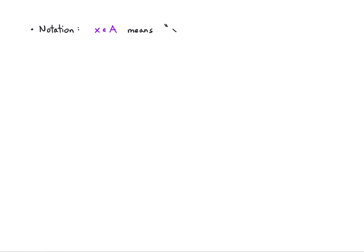Let's introduce a bit of notation. X with this epsilon symbol, A, means X is an element of A, or X belongs to A. And if I draw a slash through that symbol, it means that X does not belong to A, or X is not an element of A. This is a really useful symbol for conveying this idea in a very concise way.